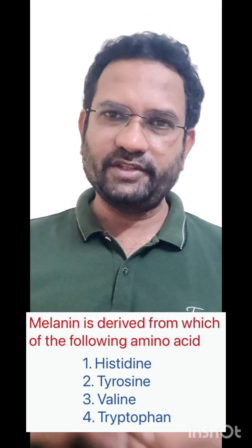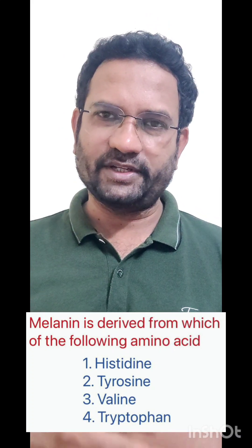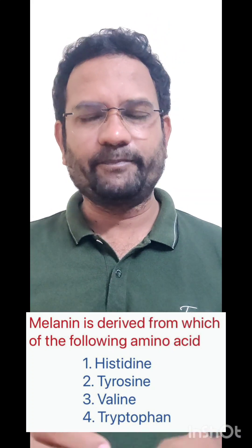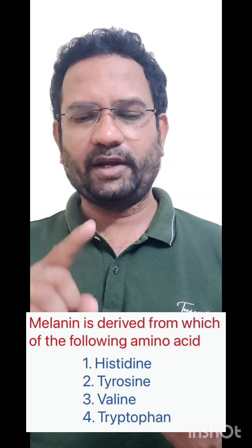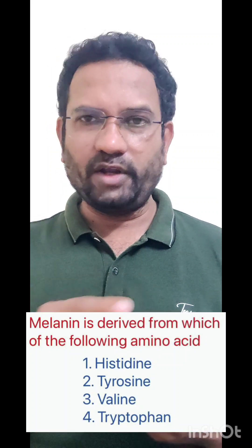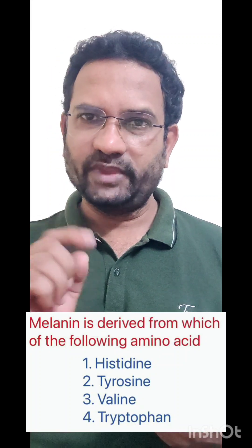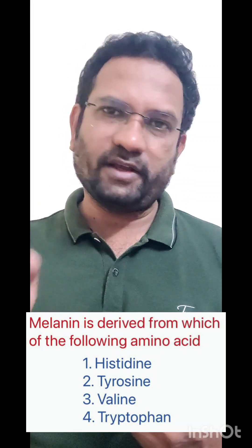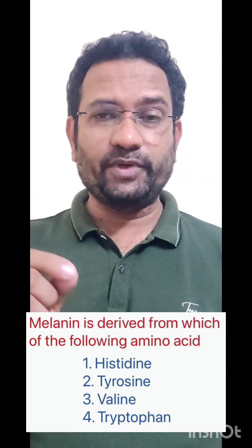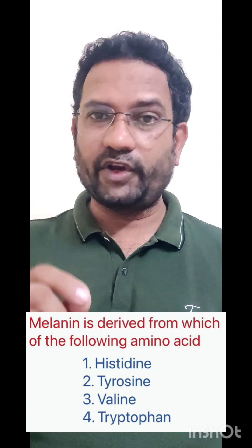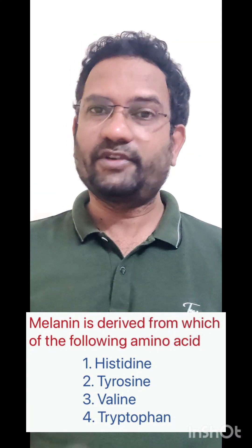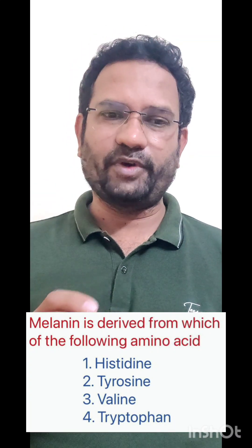The next option is tyrosine, which is an important amino acid. Melanin is derived from tyrosine. Not only melanin — from tyrosine you also get DOPA, noradrenaline, and adrenaline. All of them are derived from tyrosine. Melanin is also derived from tyrosine. Additionally, thyroid hormones — triiodothyronine and other iodine hormones — are also derived from tyrosine. So remember, tyrosine is an important amino acid.